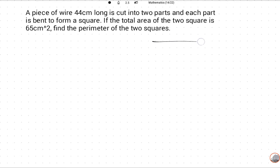So a wire, 44 cm, cut into two pieces and each part bent to form a square. Total area is 65 cm squared. Find the perimeter of two squares.